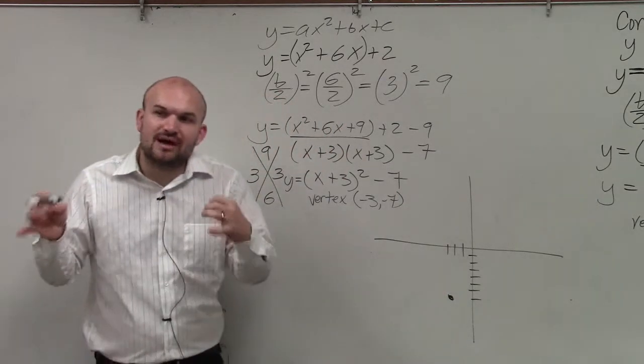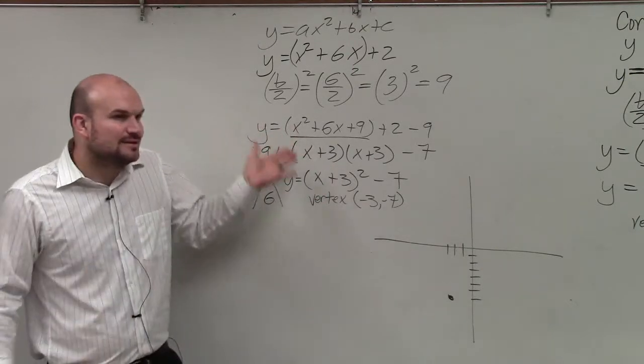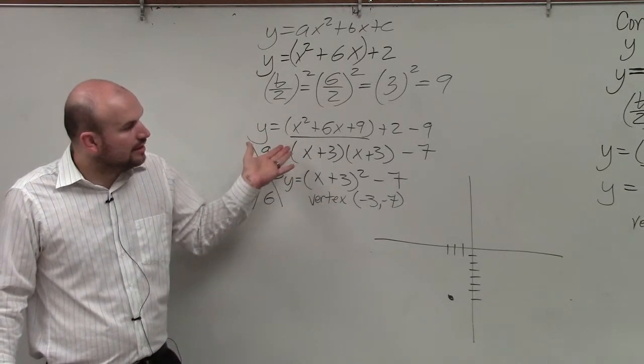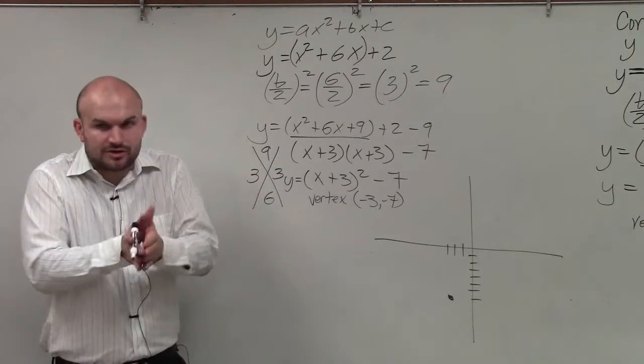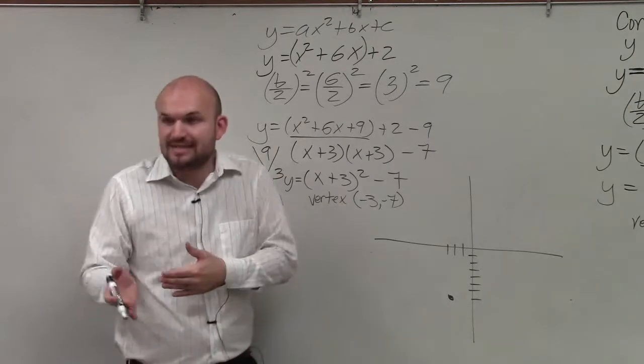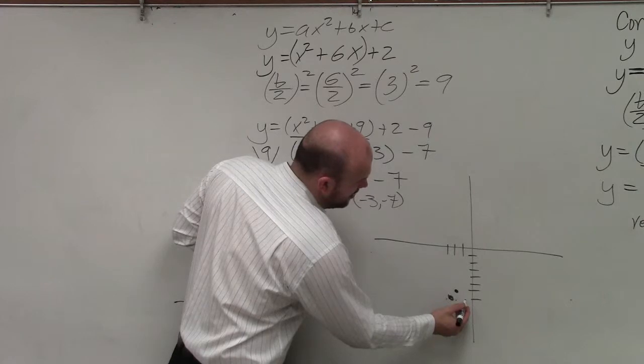Now, the last important thing, the reason why vertex form is so important is because when a is equal to 1, when we have a is equal to 1, we just follow the parent graph, which is over 1, up 1, over 2, up 4. If a was not equal to 1, then we'd have to create a table of values. So over 1, up 1, over 2, up 4.